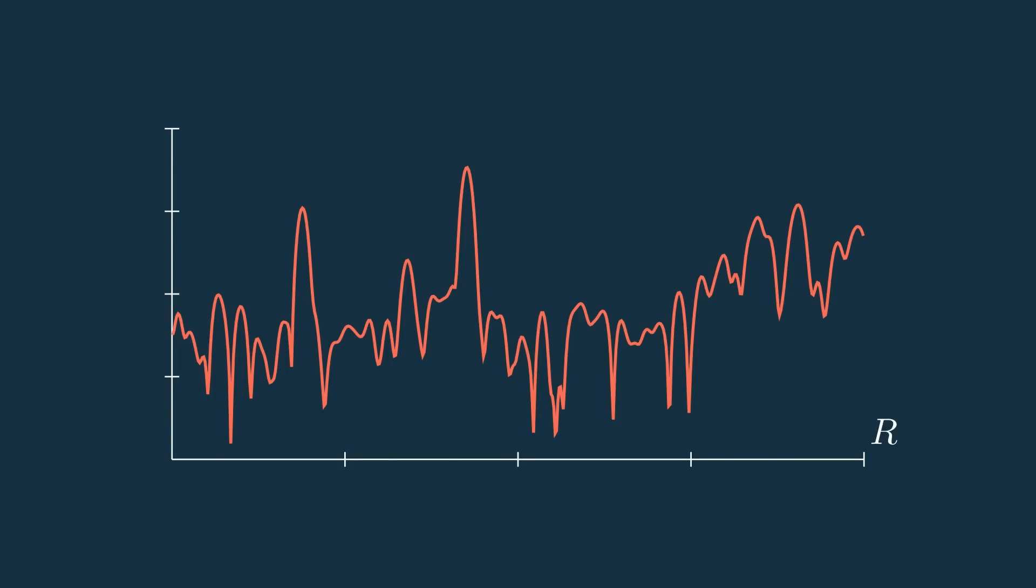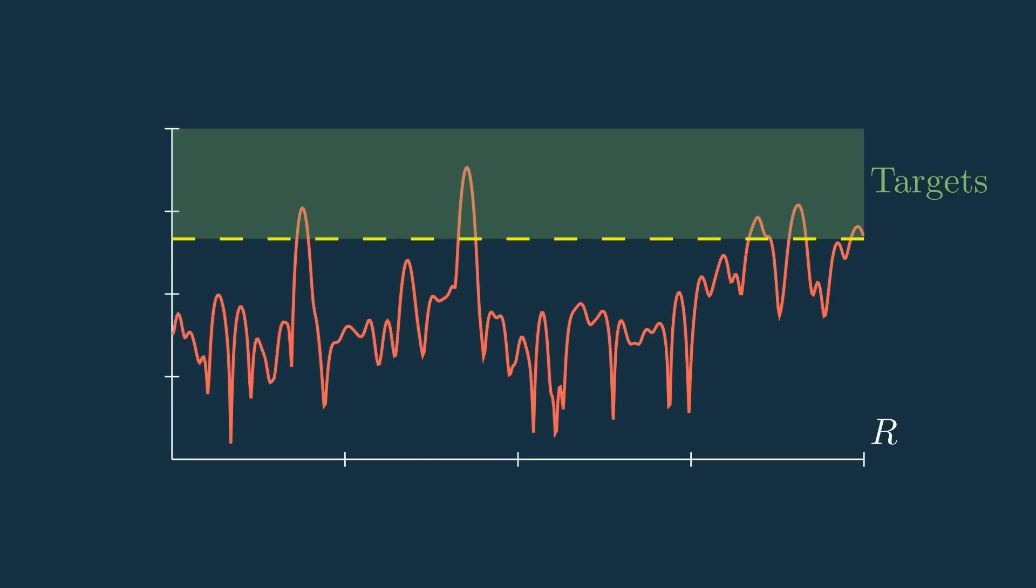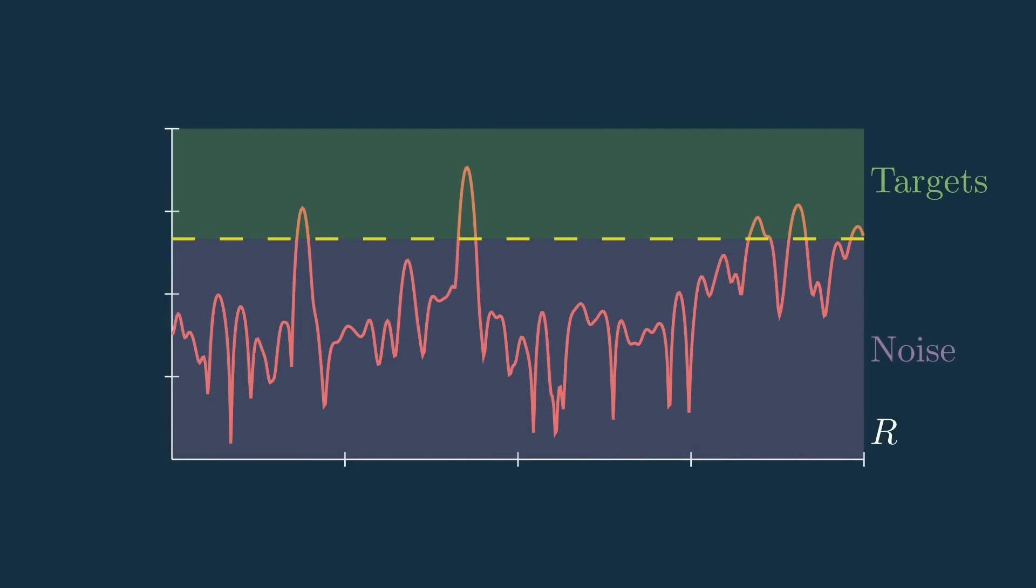Well, one solution would just be to set a static threshold. Everything above the threshold we say is a target, and everything below we say is noise. We're done, right? Well, this should actually be classified as noise, and this should be classified as a target.